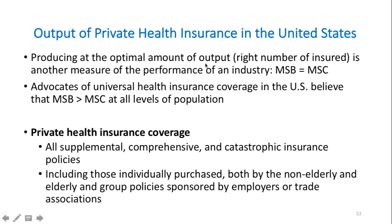The index for estimating the optimal amount of output is based on the number of the insured. We have to look at the number of people who are uninsured and insured in the United States. Advocates of universal health insurance coverage believe that marginal social benefit is greater than marginal social cost at all levels of production.